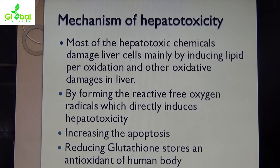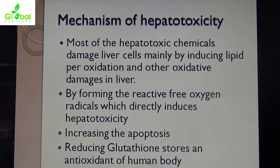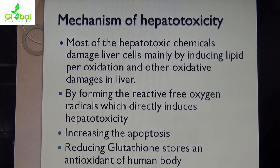The mechanism of hepatotoxicity: most chemicals and drugs damage liver cells mainly by oxidation, causing oxidative damage in the liver through lipid peroxidation. Some drugs react with free oxygen radicals and directly induce hepatotoxicity. Some increase apoptosis, and some reduce glutathione stores and antioxidants in the human body. Glutathione is the main enzyme acting as an antioxidant agent in the liver, protecting it from many diseases.